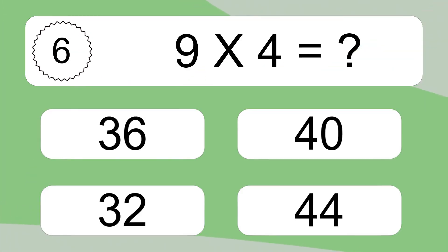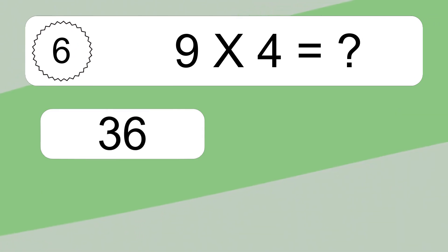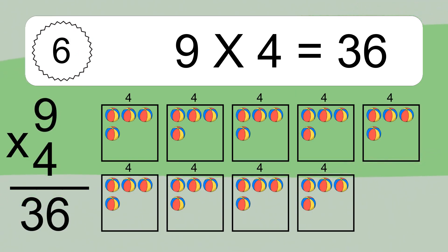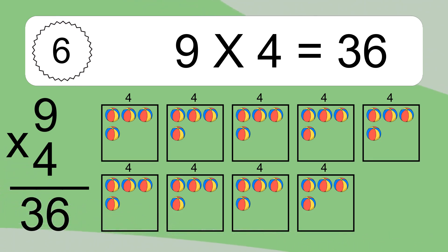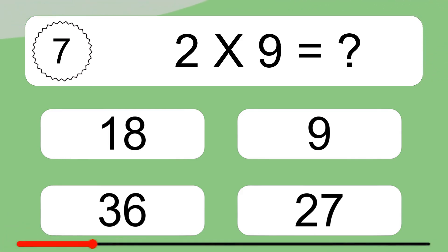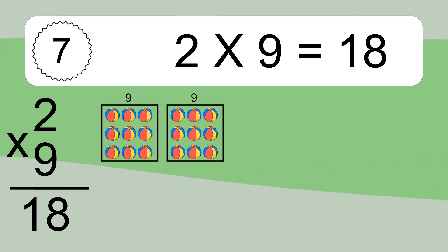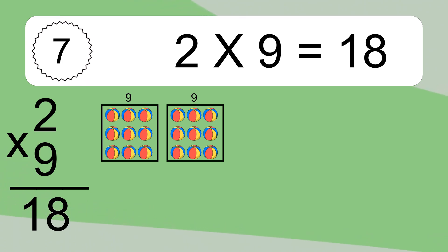9 times 4 equals what? 2 times 9 equals 18. We have 2 boxes, and each box has 9 colorful balls inside. If you count all the balls in all the boxes together, you will have 2 times 9 balls. This equals 18 balls.